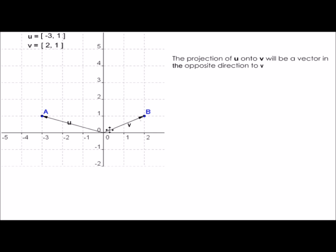We'll look at the projection of vector u onto vector v. In this case, u is not directly above v and therefore will cast a shadow on the opposite side to v, in this case down here.